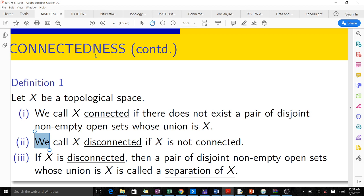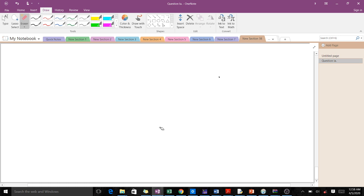We say a topological space is connected. The definition is below. Let X be a topological space. We call X connected if there does not exist a pair of disjoint non-empty open sets whose union is X.